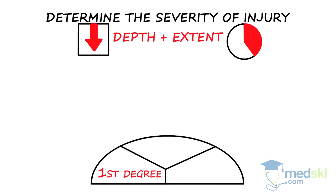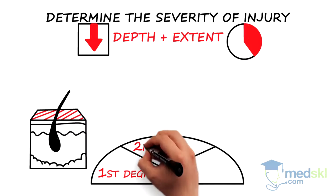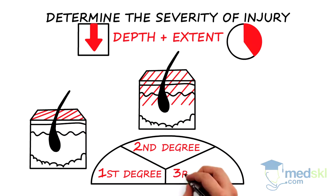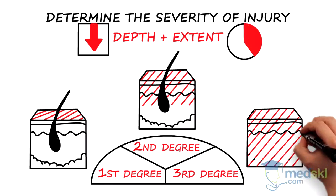First degree burns include the epidermis only. Second degree burns include portions of the dermis. Third degree burns involve all skin layers and beyond.